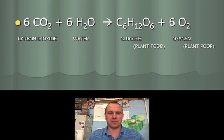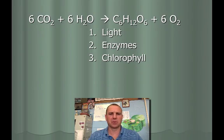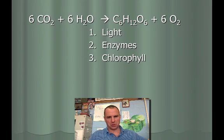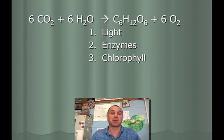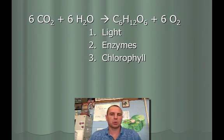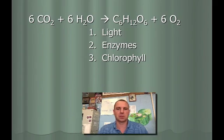Looking at photosynthesis again, I like adding three things over or under the arrow. Just because you have carbon dioxide and water doesn't mean you make glucose and oxygen — there must be something else needed. You need light, usually sunlight. You need enzymes, which speed up chemical reactions. And you need chlorophyll, which is a green pigment whose main purpose is to capture sunlight. Without these three things along with carbon dioxide and water, you can't produce glucose and oxygen.